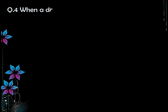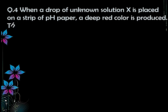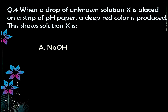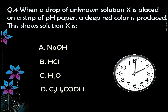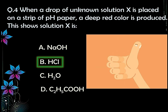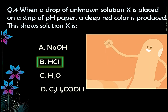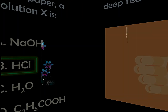Question number four: when a drop of unknown solution X is placed on a strip of pH paper, a deep red color is produced. This shows solution X is — options: A) NaOH, B) HCl, C) H₂O, D) C₂H₅COOH (propionic acid). The correct answer is option B — HCl — because deep red color appears in the case of strong acids only, and HCl is a strong acid whereas C₂H₅COOH is a weak acid.